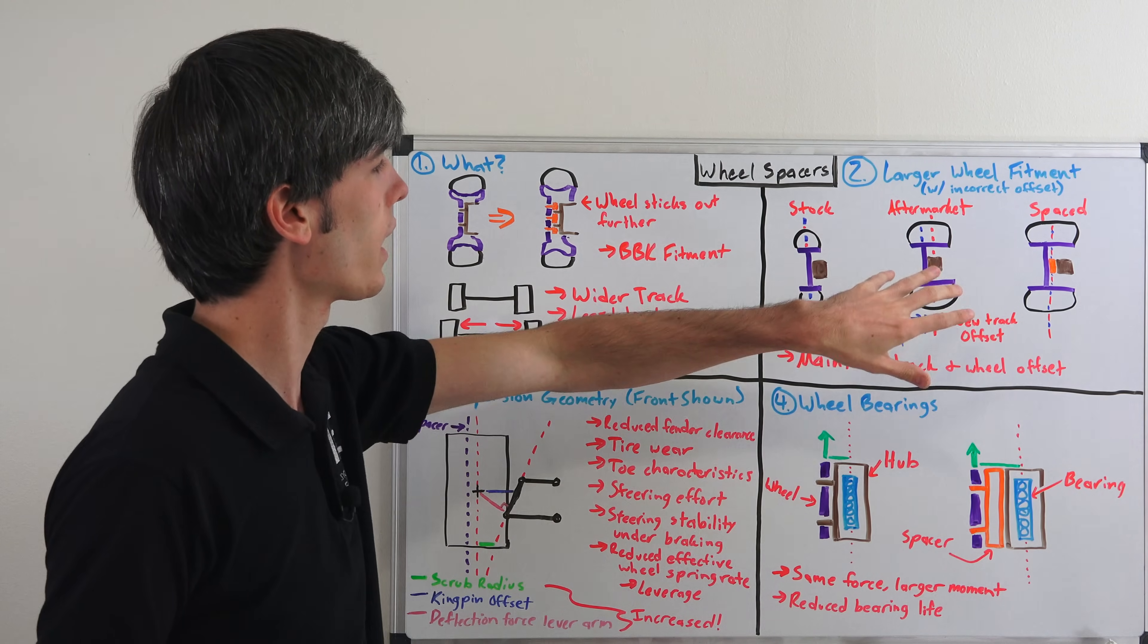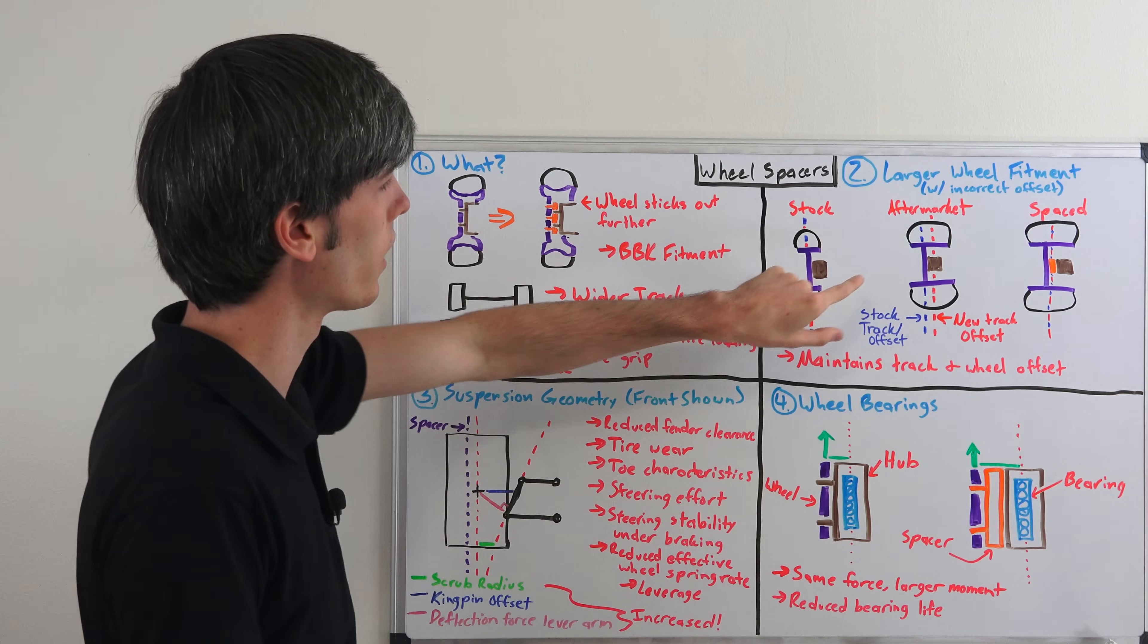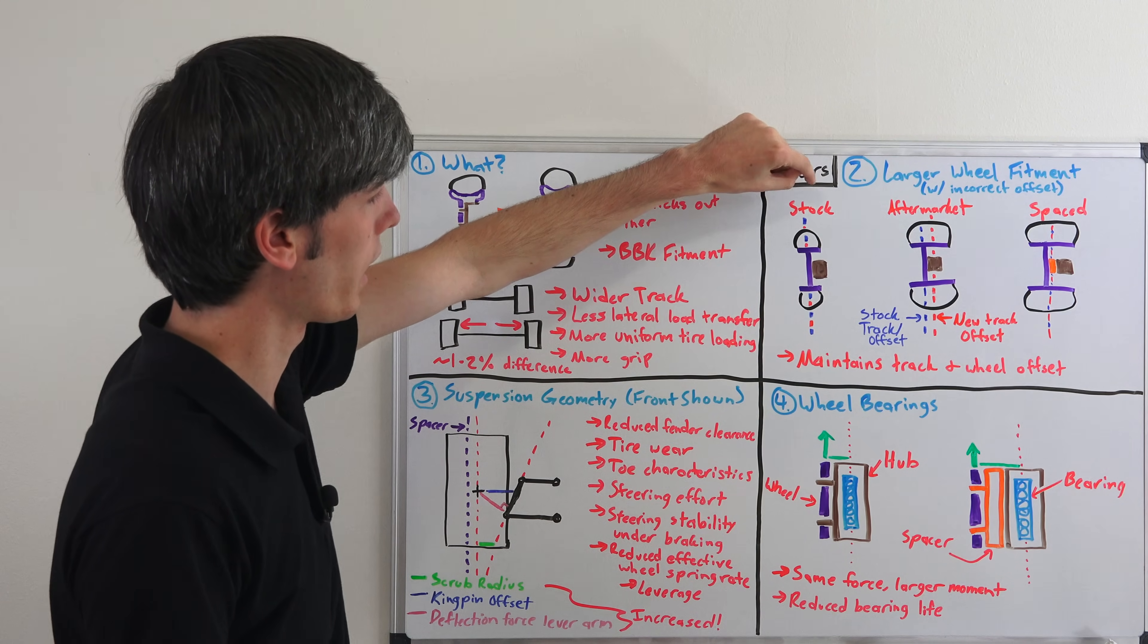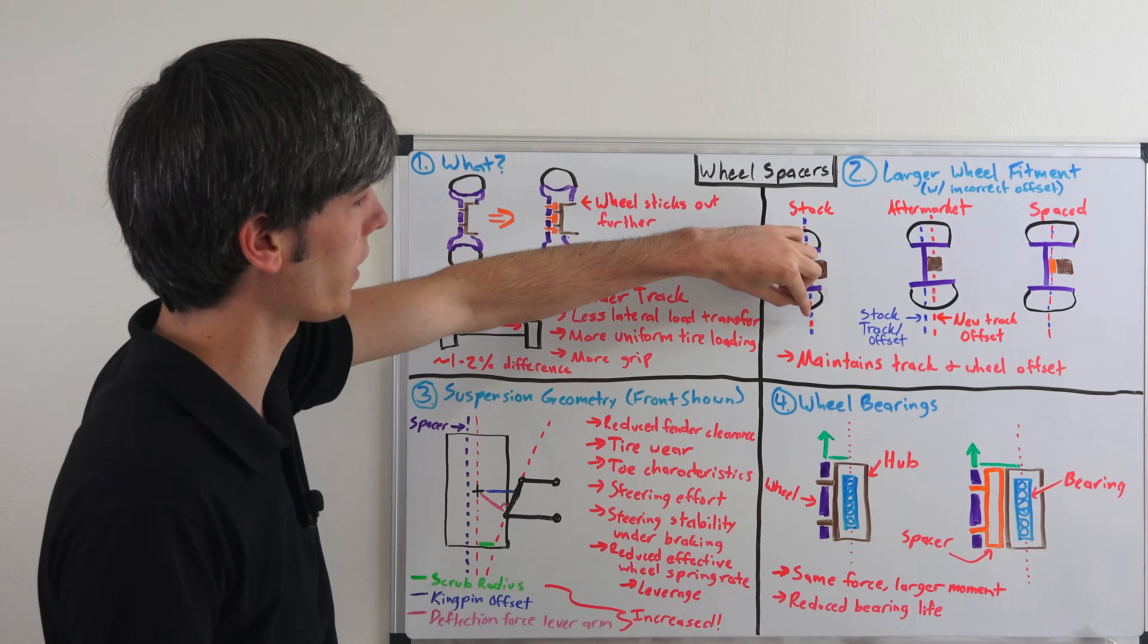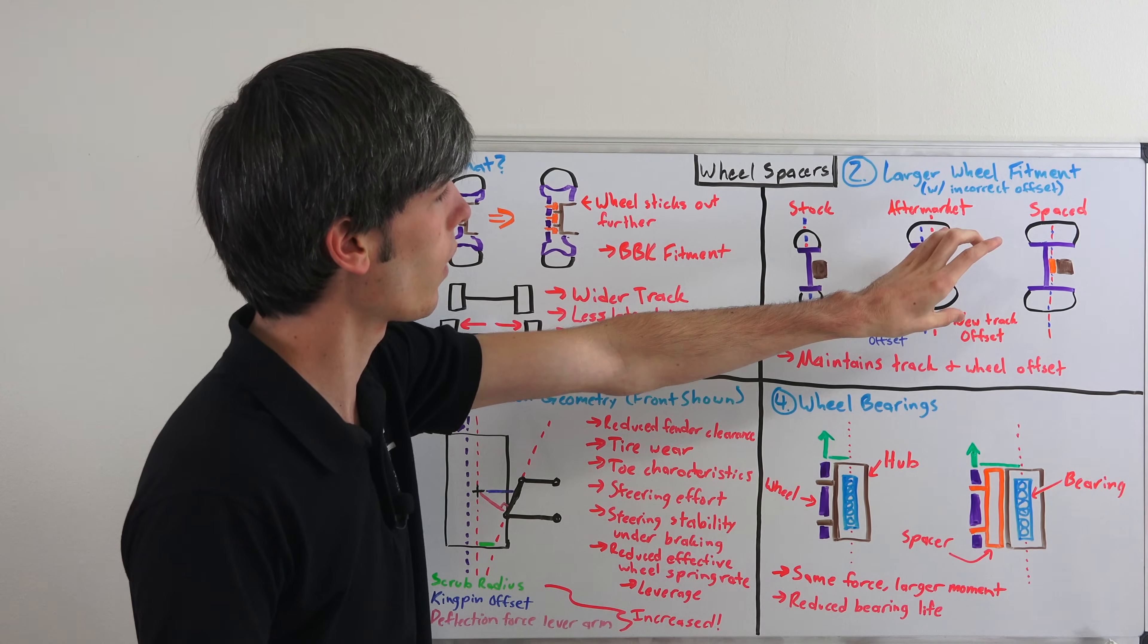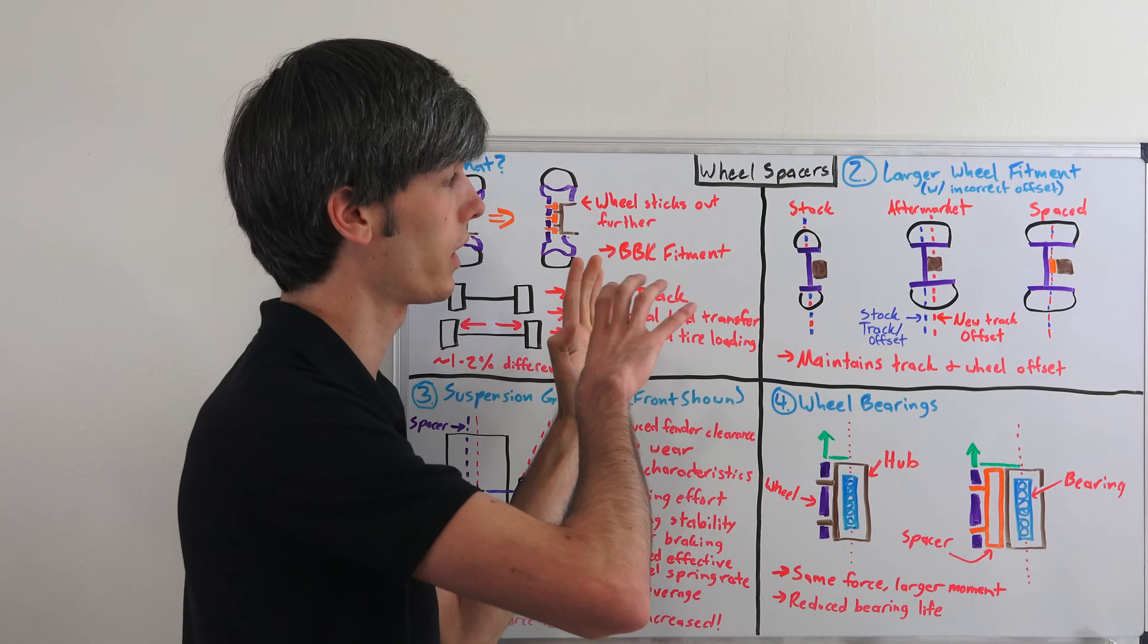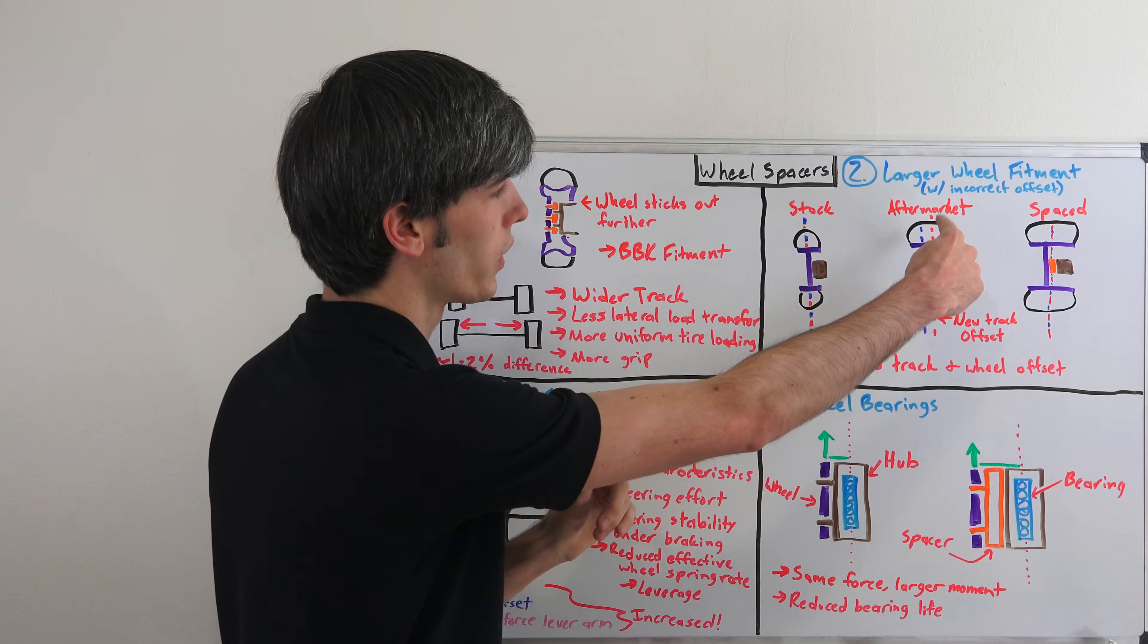But that said, if you can't, let's say you get some that are larger. And so here's your stock and your stock track there in blue and your stock offset there in red. So as you get the aftermarket and you put that onto the hub, let's say these kind of go in further. So they're going to be interfering with your suspension, things like that.